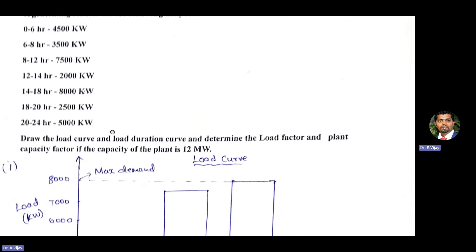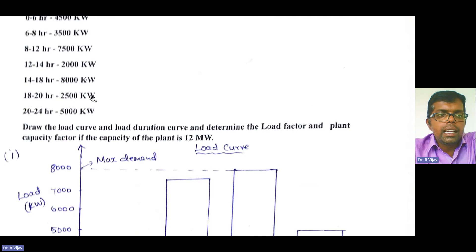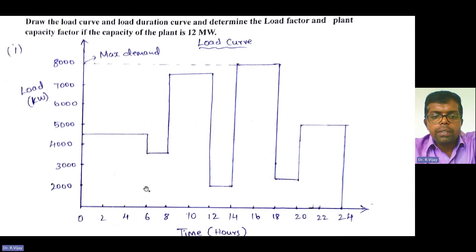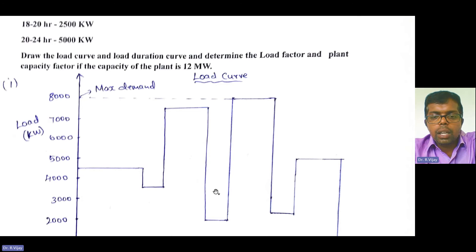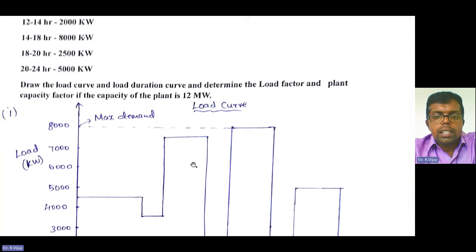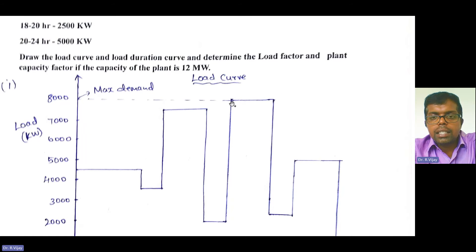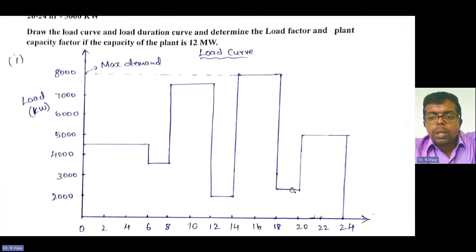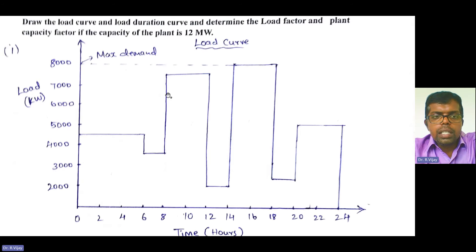From 0 to 6 hours, the load is 4500 kilowatts. From 6 to 8 hours, it drops to 3500 kilowatts. From 8 to 12 hours, it rises to 7500 kilowatts. From 12 to 14 hours, it drops to 2000 kilowatts. From 14 to 18 hours, it rises again to 8000 kilowatts. From 18 to 20 hours, it drops to 2500 kilowatts. From 20 to 24 hours, it is 5000 kilowatts. This is how we draw the load curve.